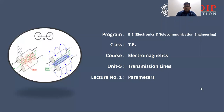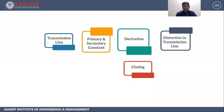Hello everyone. Today we are going to start with transmission lines. It is unit number five of the Electromagnetic subject. This subject belongs to the third year of Electronics and Telecommunication Engineering of Savitribai Phule Pune University. Major topics of today's session are transmission line, primary and secondary constants.